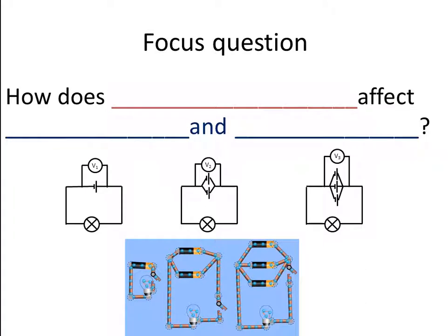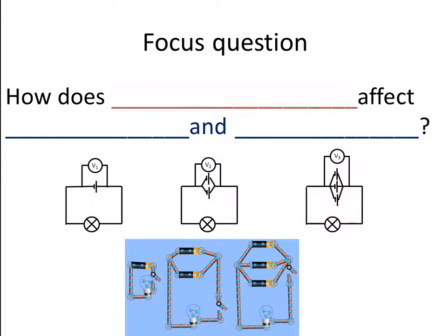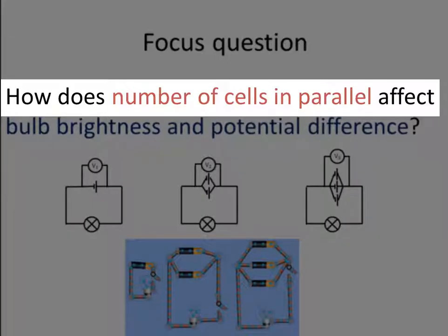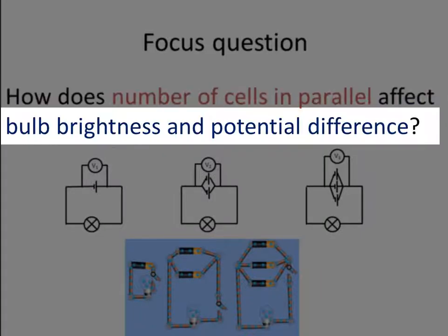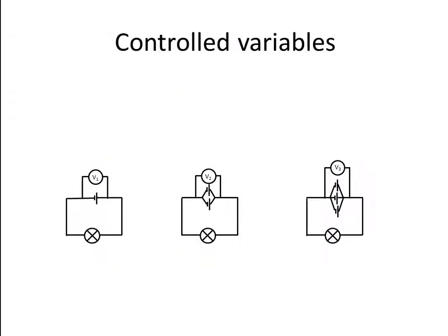What is our focus question? What is our independent variable — what are we making different between these three treatments? In this investigation we have two dependent variables, two outcomes that we are going to measure. We are asking how does the number of cells in parallel affect two things: bulb brightness and potential difference. What do we need to keep the same between these three circuits to make this a fair test? What are our controlled variables?